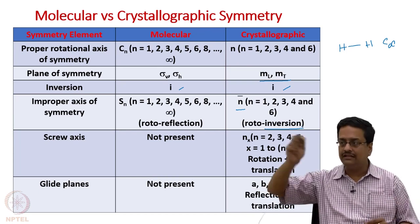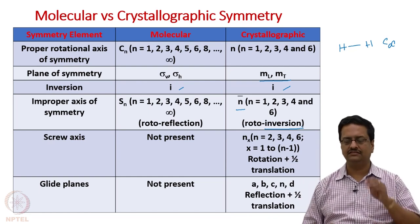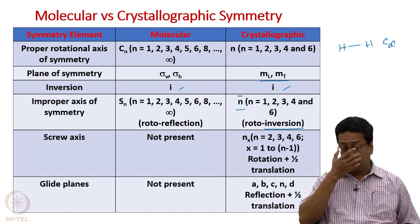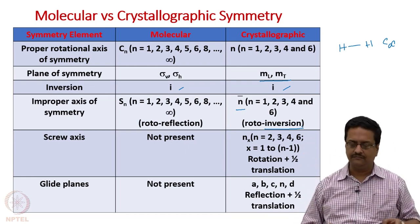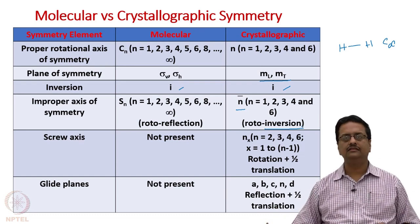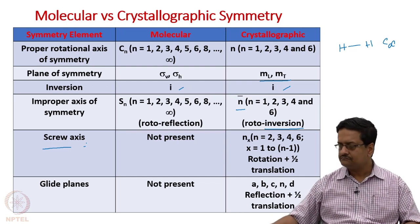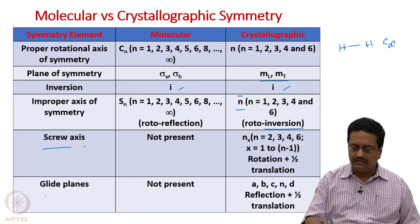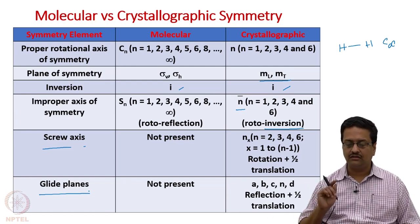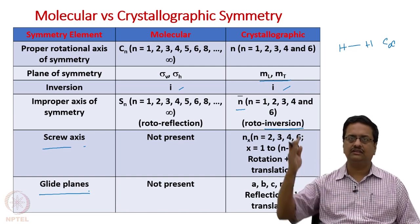In addition to these symmetry elements which are common in both molecular and crystallographic symmetry, we have two more symmetry elements that appear in crystallographic symmetry: the screw axis and glide planes, which are not present in molecular symmetry for obvious reasons. These are not just axes — they are rotational axes along with a translational component, or a reflection with a translational component. The screw axis is denoted as nₓ where n can be 2, 3, 4, and 6, and x varies from 1 to n minus 1.